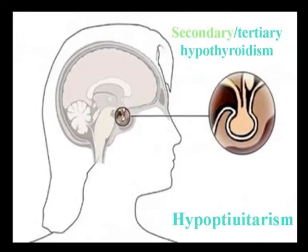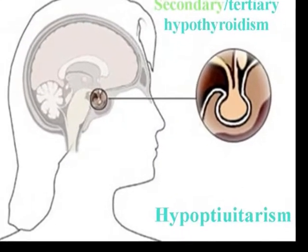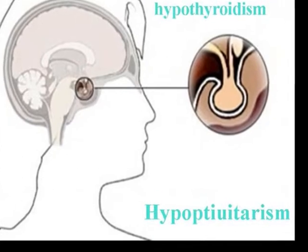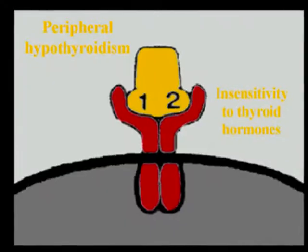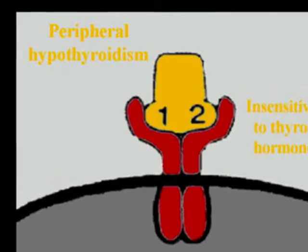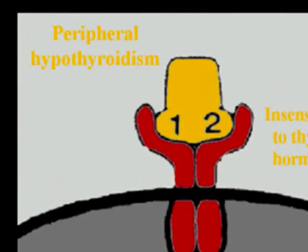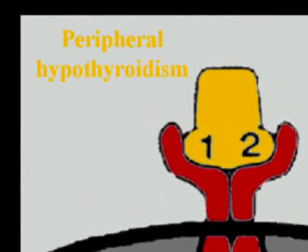Secondary disease is due to hypopituitarism, and tertiary disease is due to failure of the hypothalamus. Peripheral hypothyroidism is due to tissue insensitivity to the action of thyroid hormones.